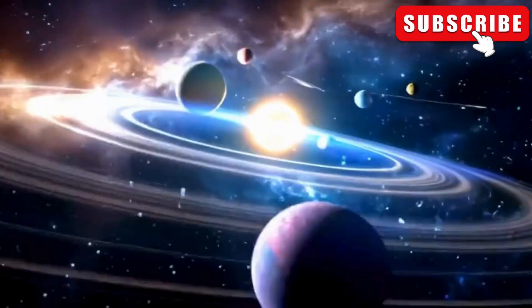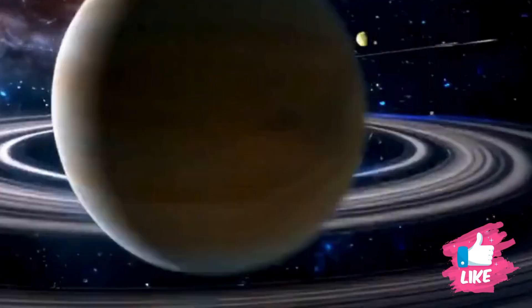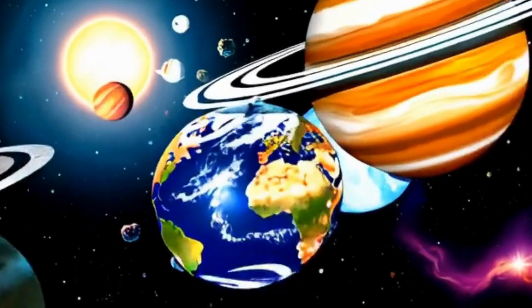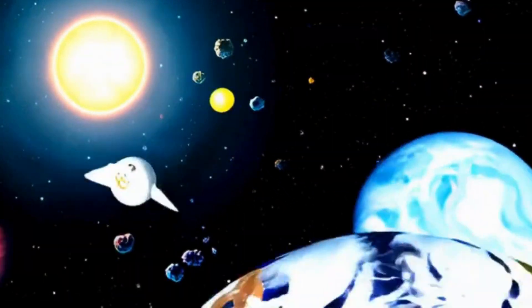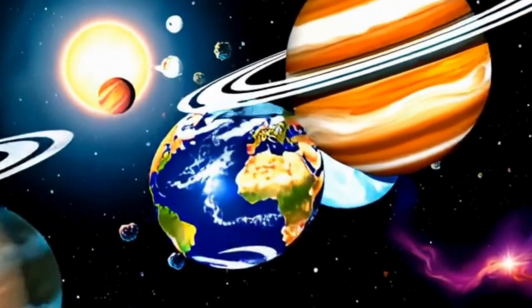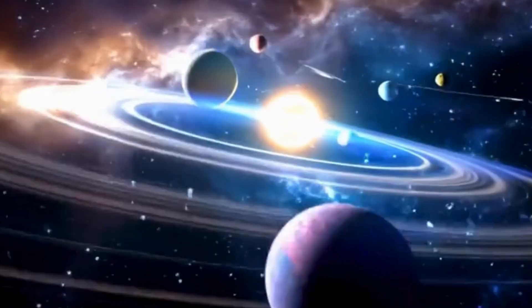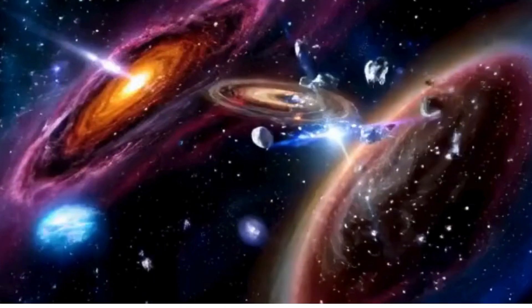Jupiter is the biggest of all, with a stormy spot so huge and tall. Saturn's rings are shiny and white, spinning jewel in space so high.